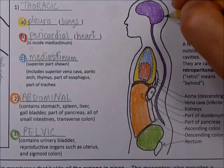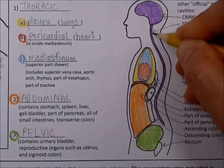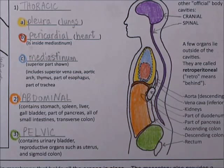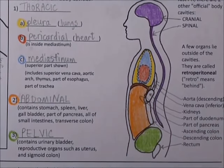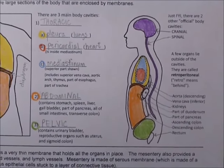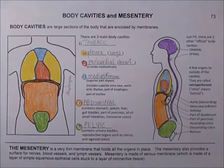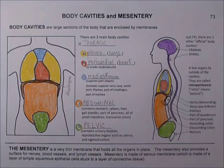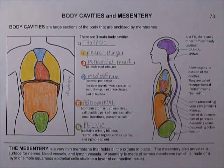These are easy, right? Cranium — brain. Spine — spinal cord. So there's all the bags inside of you. You know what's inside what, and a few that are behind all the bags.